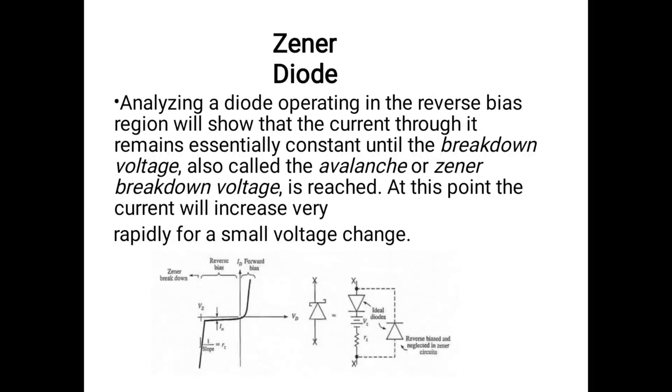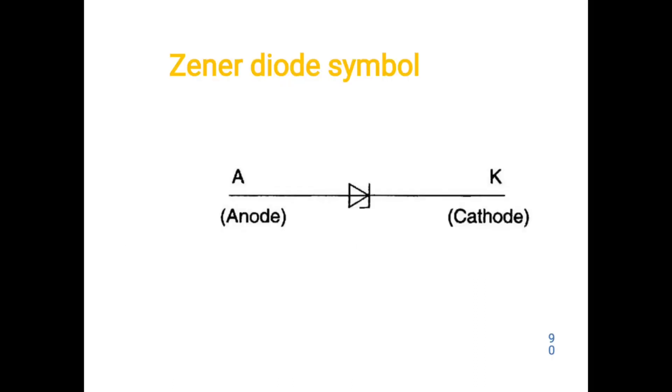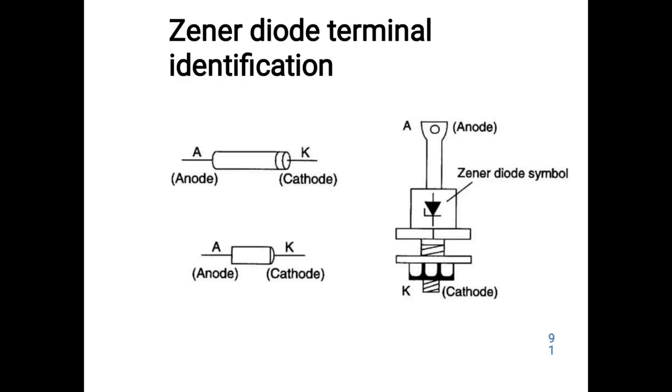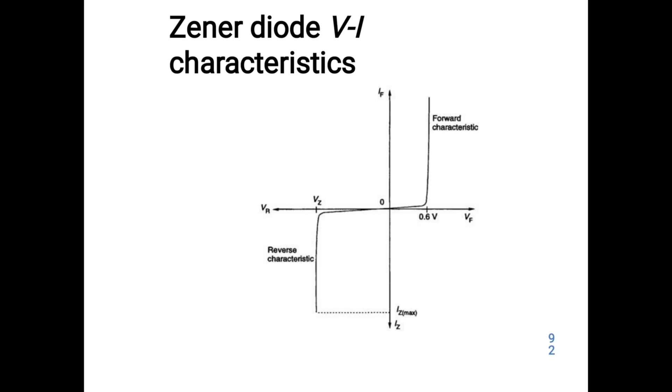This circuit carries the Zener diode with two terminals. It operates in reverse bias. The Zener diode symbol shows the anode and cathode terminals. Terminal identification indicates the anode and cathode for the symbols. The cathode value is the first one, Zener diode of the CBZ.